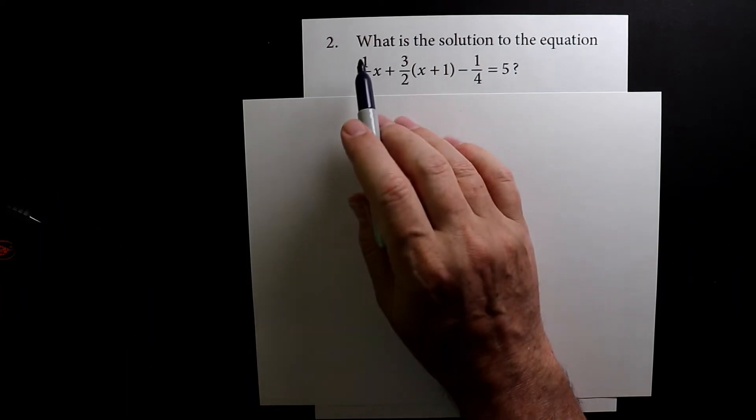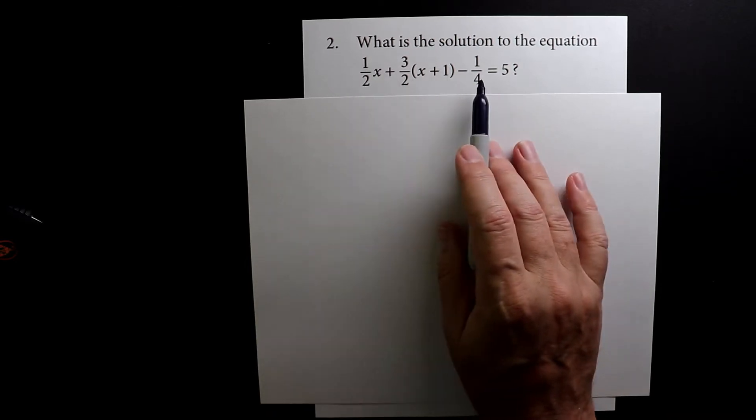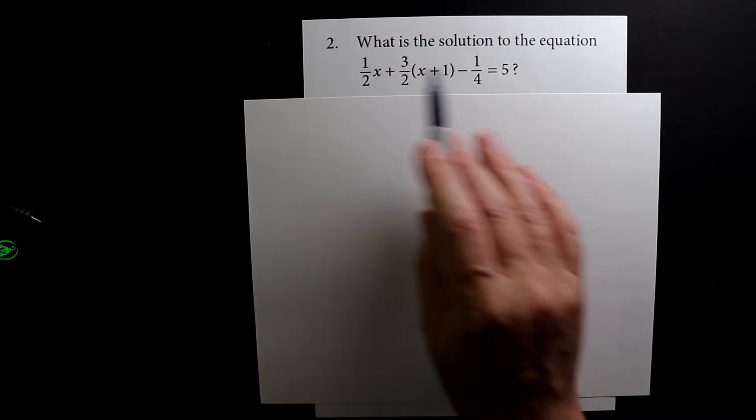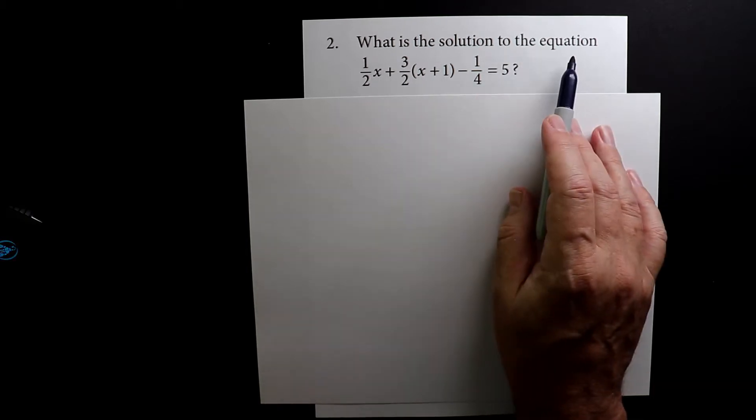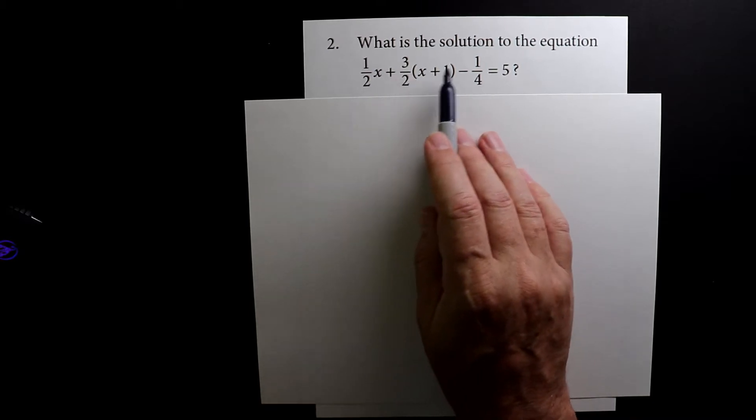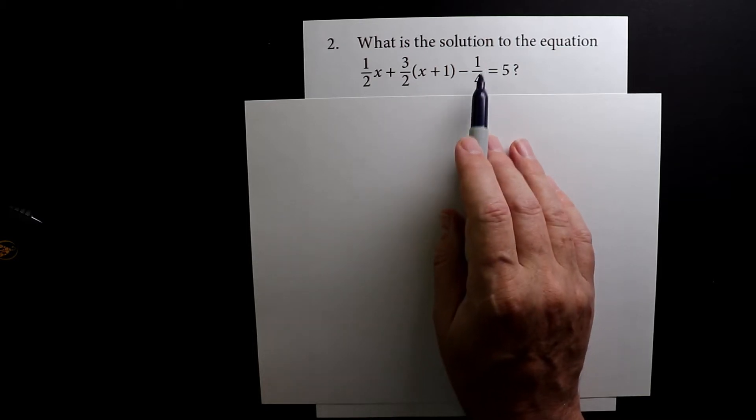So this is the second problem on test two. If you notice here, you have a very long equation with a bunch of fractions equaling five. What is the solution to the equation one half x plus three over two times in parentheses x plus one minus one over four?